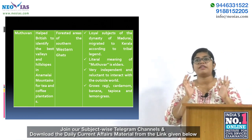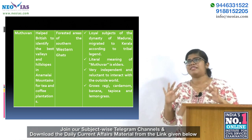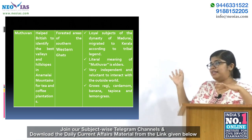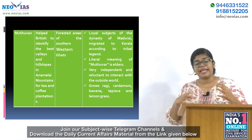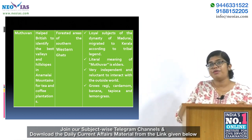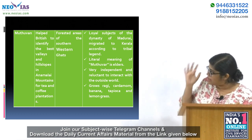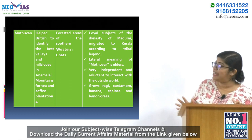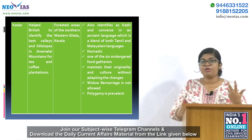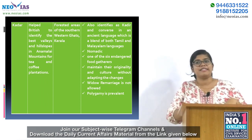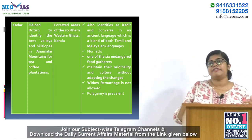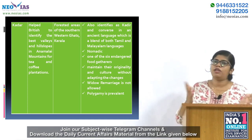The Muduven tribe is from southwestern India — found in forested areas of Kerala and Tamil Nadu. Along with the Kader tribe, they helped the British identify hill slopes and valleys for tea and coffee plantations. The Kader tribe is also found in southern regions — Kerala — and they are basically nomadic tribes.